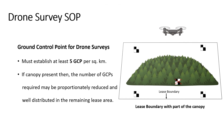Suppose you have a leased area of 478 hectares. A minimum of 24 GCPs, including 3 permanent GCPs, should be placed within the leased area.